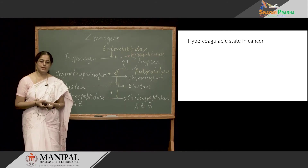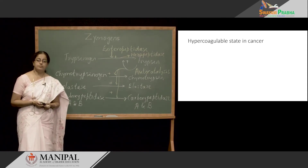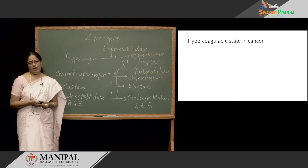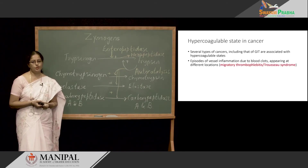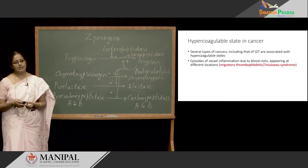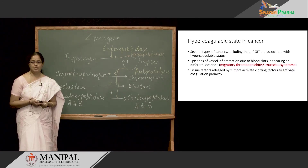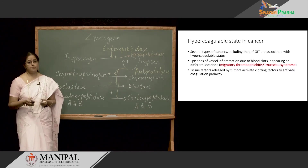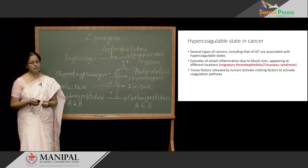Another condition associated with premature activation of Zymogens is that many types of cancer are associated with a hypercoagulable state, also known as migratory thrombophlebitis or Trousseau syndrome. Clot formation occurs in the superficial vessels, and these clots appear at different places at different times — hence the term migratory thrombophlebitis. The cancerous tissues are able to release certain tissue factors which activate the extrinsic pathway of blood coagulation, thereby causing clot formation.